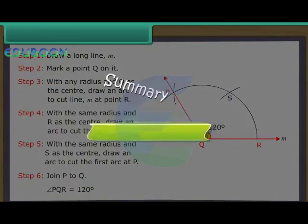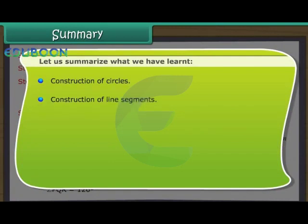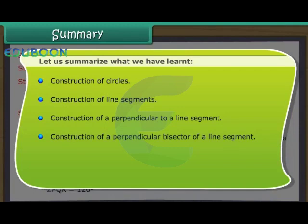Summary. Let us summarise what we have learnt: construction of circles, construction of line segments, construction of a perpendicular to a line segment, construction of a perpendicular bisector of a line segment, construction of an angle bisector, and construction of angles.